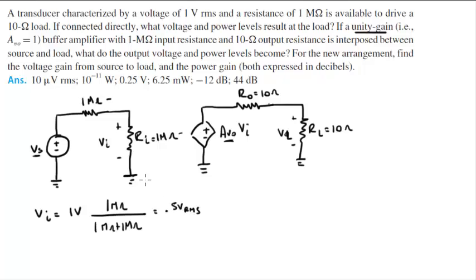This is VI right here, same as this VI right here. So AVO times VI, I told you it's a unity gain, the problem tells you it's a unity gain amplifier, so that's 1. So